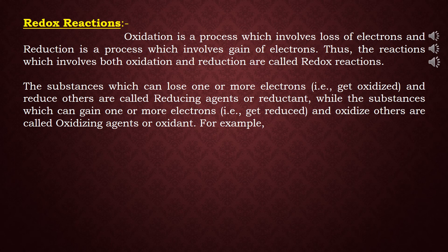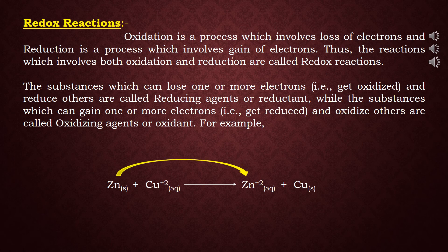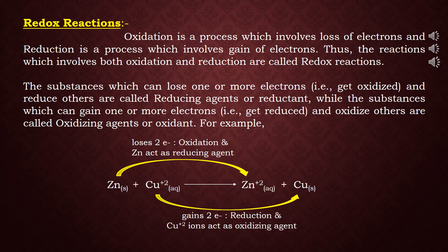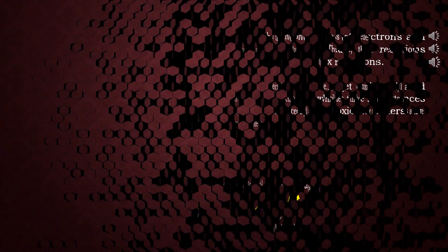For example, in a redox reaction of zinc metal with copper salt, zinc undergoes oxidation and changes to zinc ions by losing two electrons. So oxidation takes place at zinc metal, and it acts as a reducing agent. On the other hand, copper(II) positive ions gain two electrons and change to copper solid — reduction takes place at copper ions, and copper ions act as oxidizing agents because they can oxidize zinc metal.